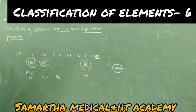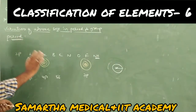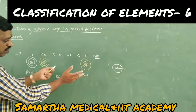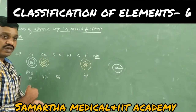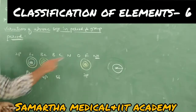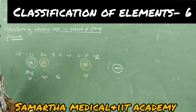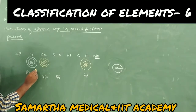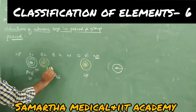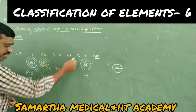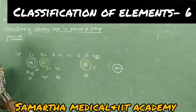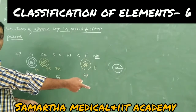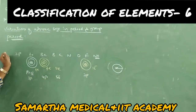But when proton number increases, the number of electrons also increases — lithium has 3 electrons, beryllium has 4, up to 7 electrons. When protons increase, electrons also increase. So how does atomic size decrease?